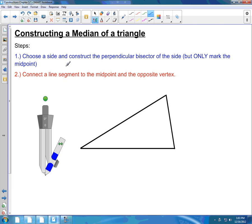Alright, so today we're going to construct the median of a triangle. There are two steps to this. The first step is you choose a side and construct a perpendicular bisector of the side, but you don't need to draw the entire bisector.